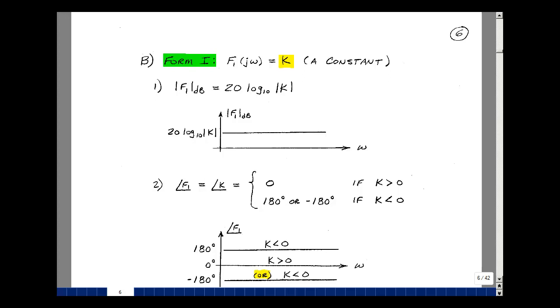This lesson deals with Bode plot forms. You can find these notes in the ECE 202 e-book in chapter 12, starting on page 6. As I mentioned in the last video, there are eight simple forms that can characterize any transfer function. Let's look at some of these.